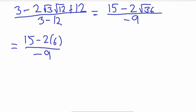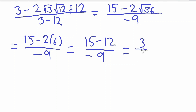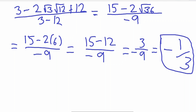So now we have 15 minus 2 times 6, which is 15 minus 12, giving us 3, over negative 9. Simplifying 3 over negative 9, that is negative one third. The answer to our equation is negative 1/3. Thank you for watching, I hope you enjoyed this video — see you next time, bye!